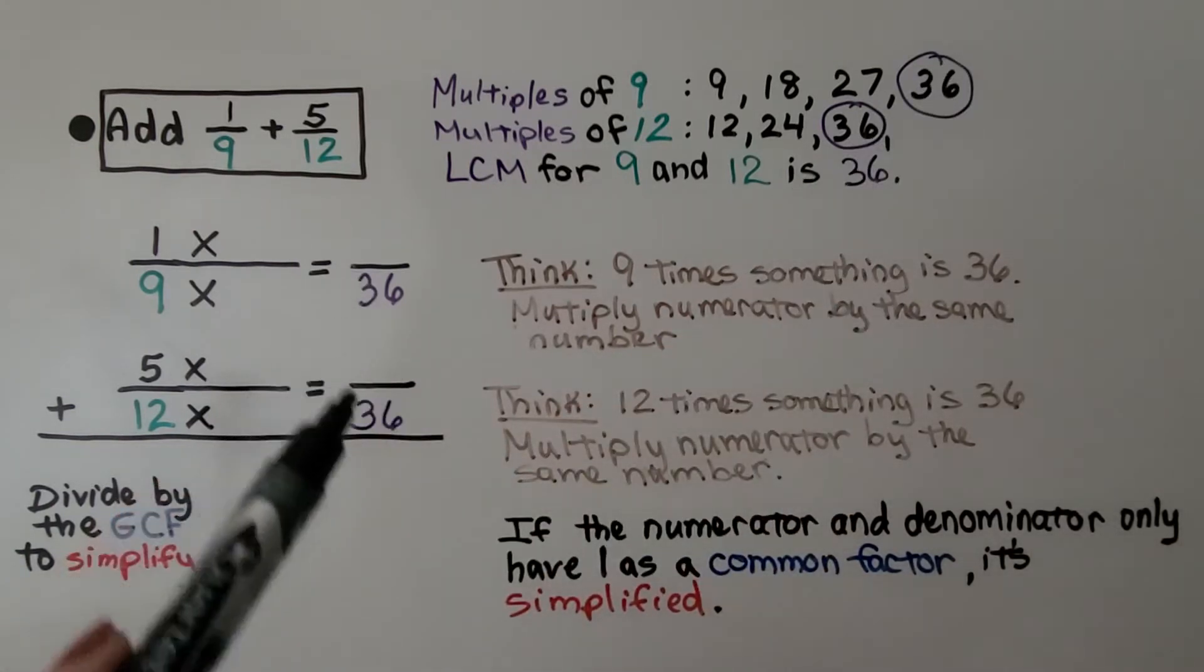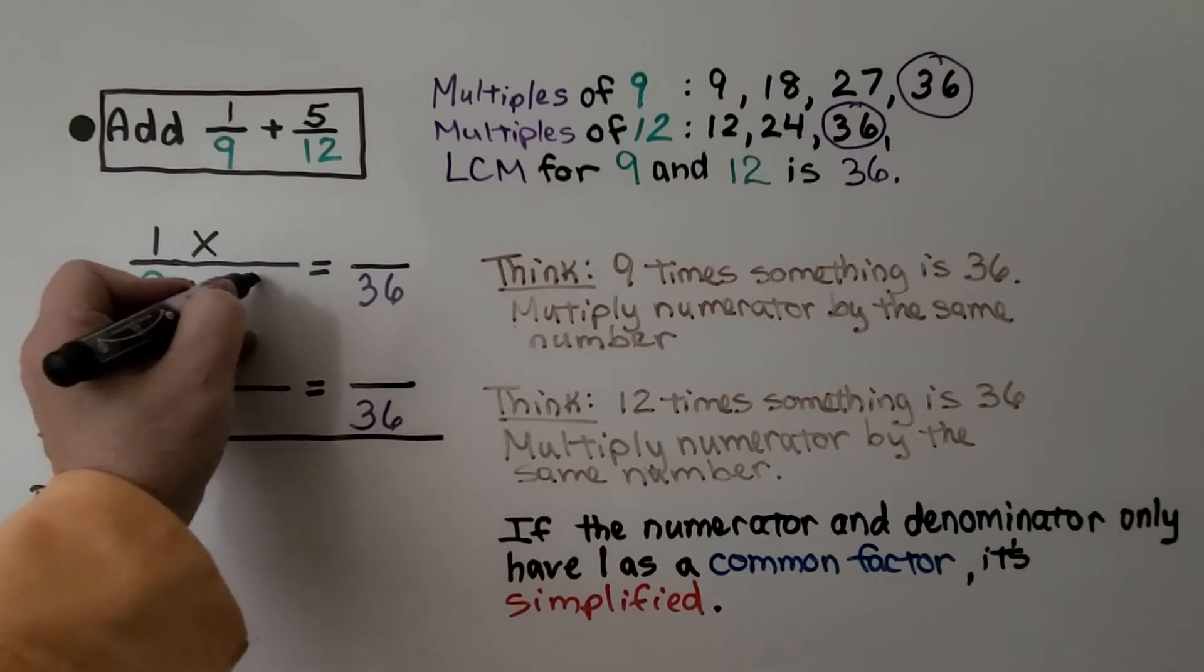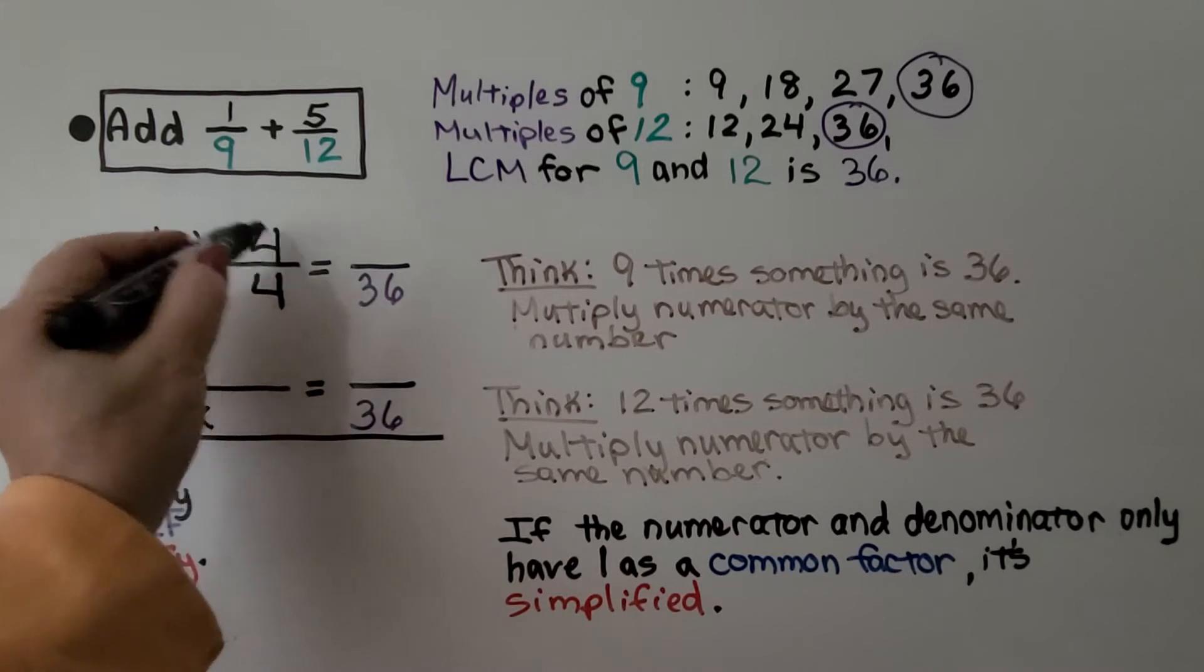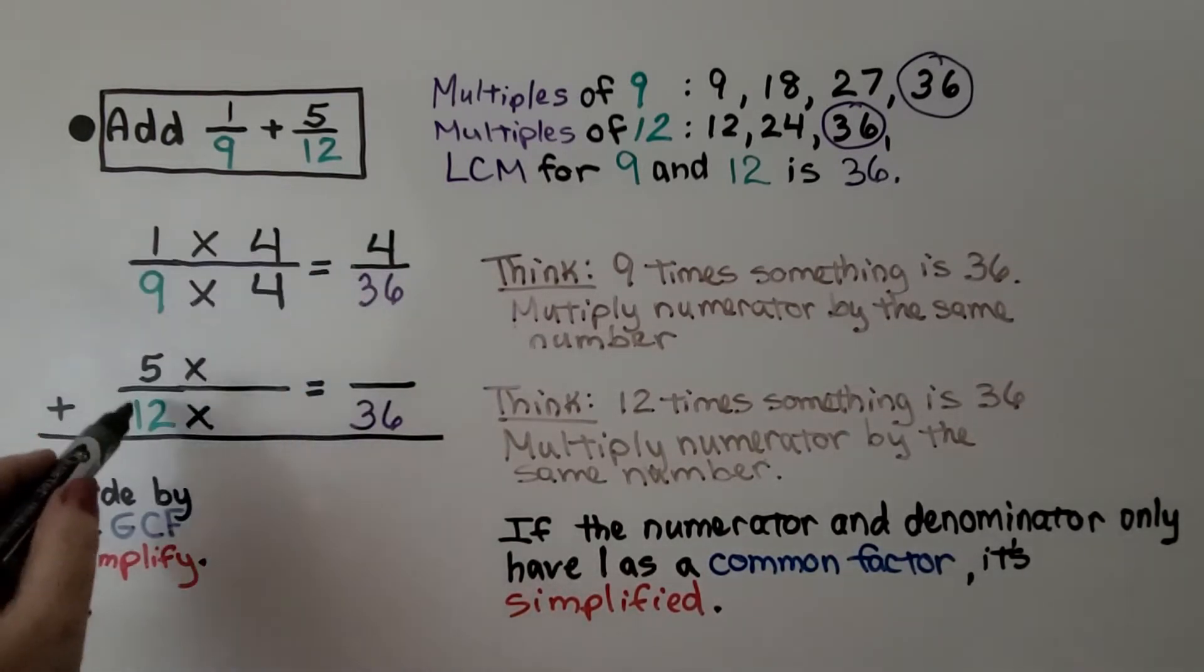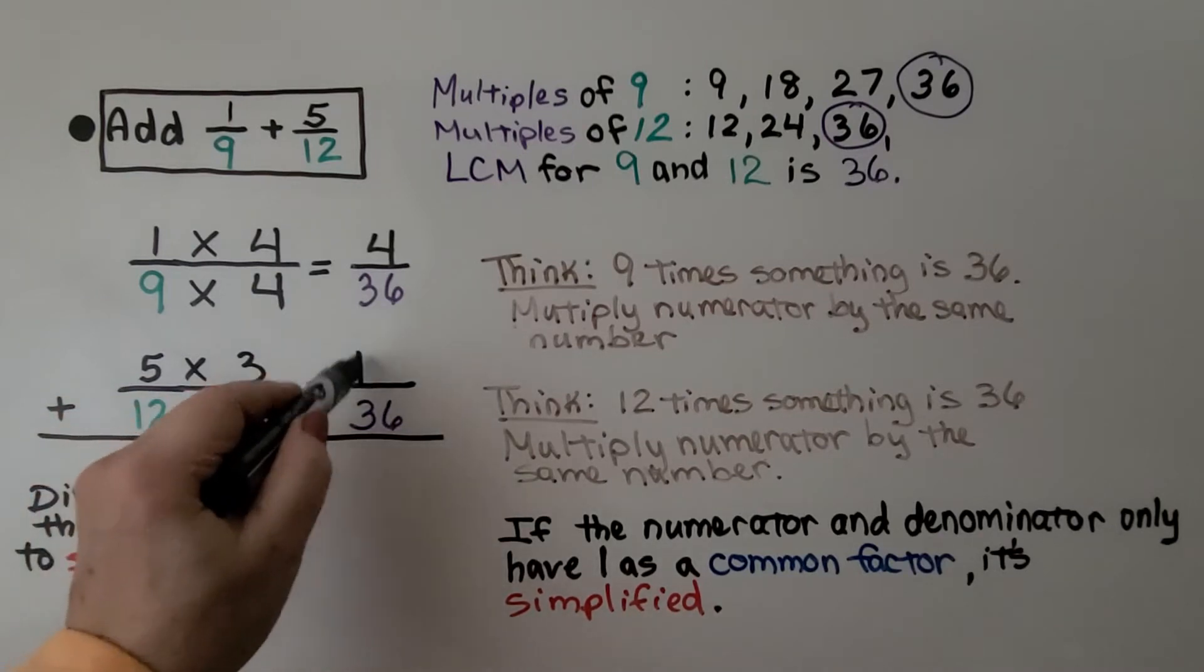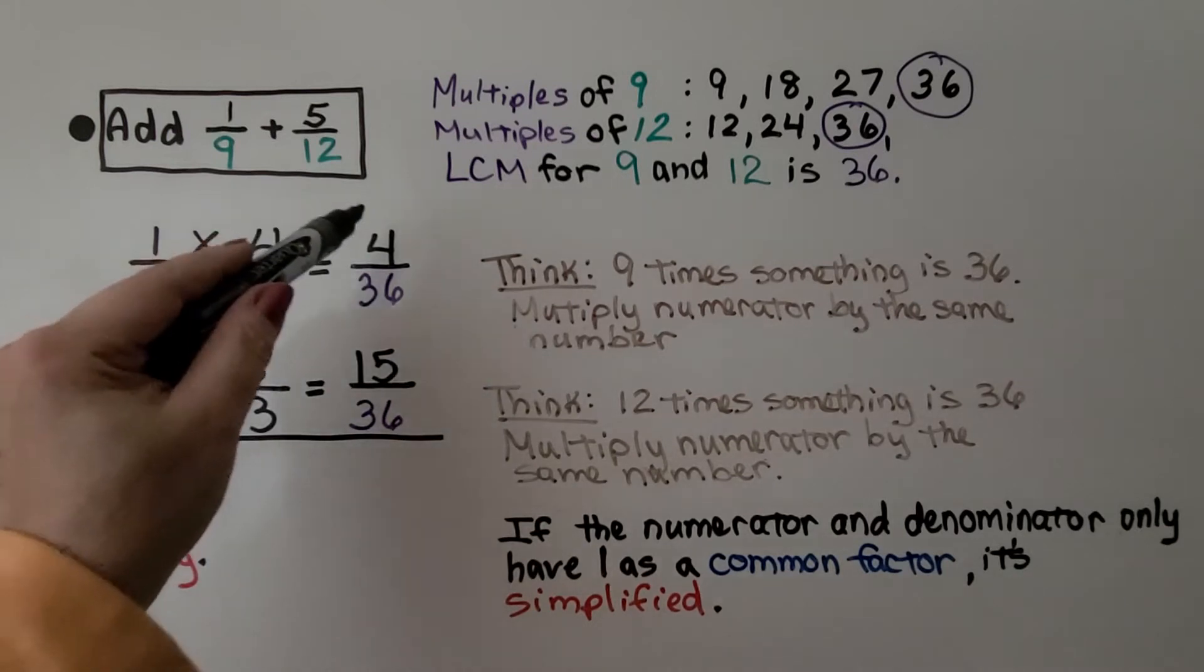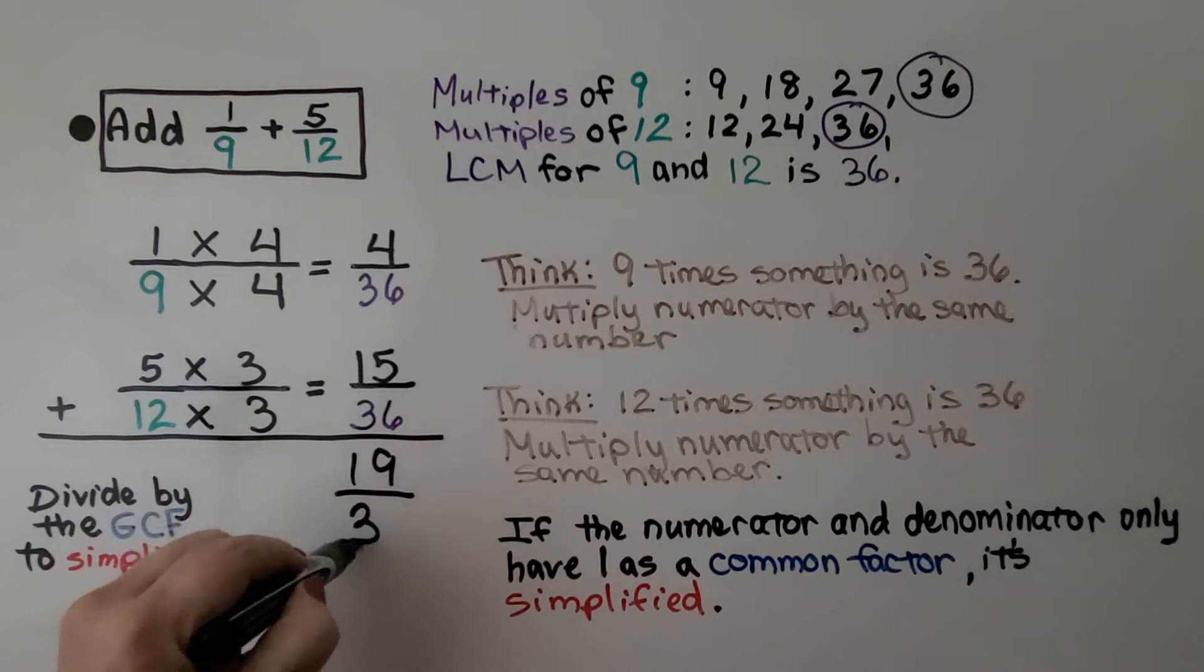So we know they're going to meet at 36. We ask ourselves, 9 times something is 36. Well, that's 9 times 4. That means we need to multiply the numerator by 4. That means we have 4/36. And 12 times 3 is 36. That means we need to multiply the 5 times 3. It's going to give us 15. Now we can add them. They have the same denominator. 4 plus 15 is 19 and it's going to be 36.